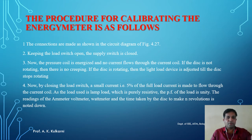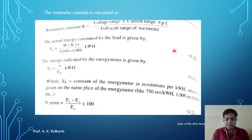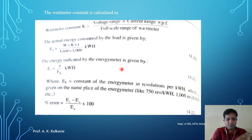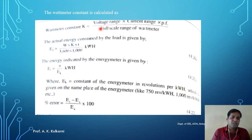These are the various steps to follow for the calibration of the energy meter. Next, we need to calculate the wattmeter constant. The wattmeter constant is given by: voltage range multiplied by the current range multiplied by the power factor, divided by the full scale range of the wattmeter — for example, 0 to 1000 watts or 0 to 500 watts. The voltage is indicated by the voltmeter, current by the ammeter, multiplied by power factor, divided by the full scale range of the wattmeter. We substitute all these values to get the wattmeter constant.